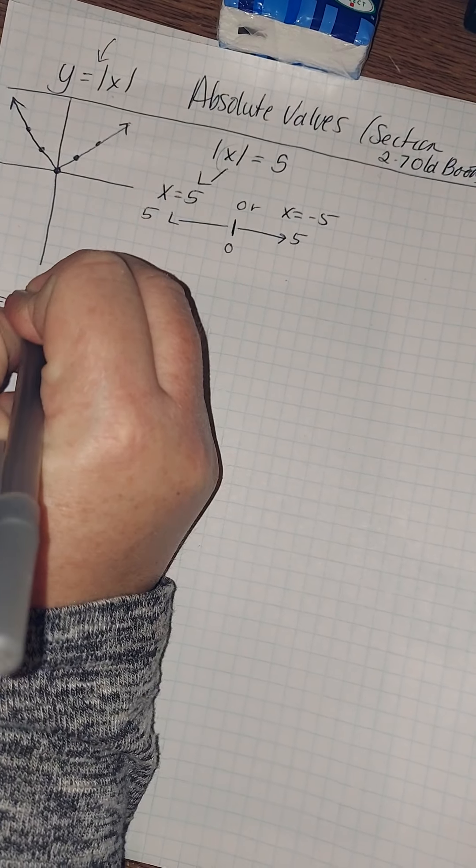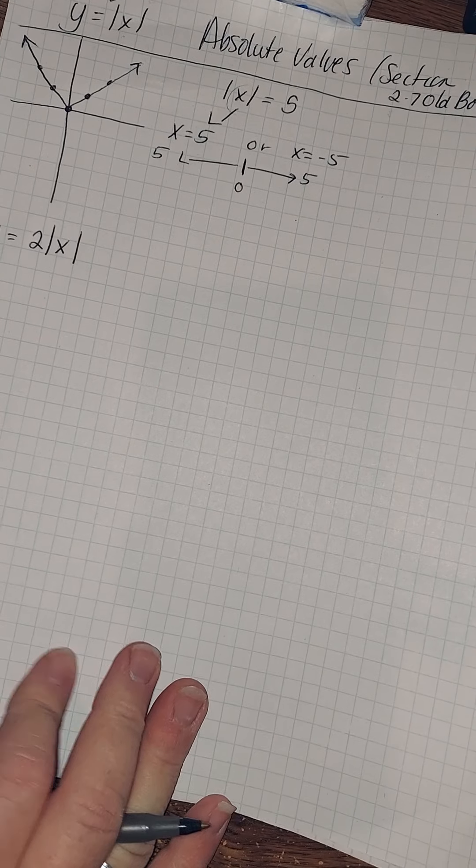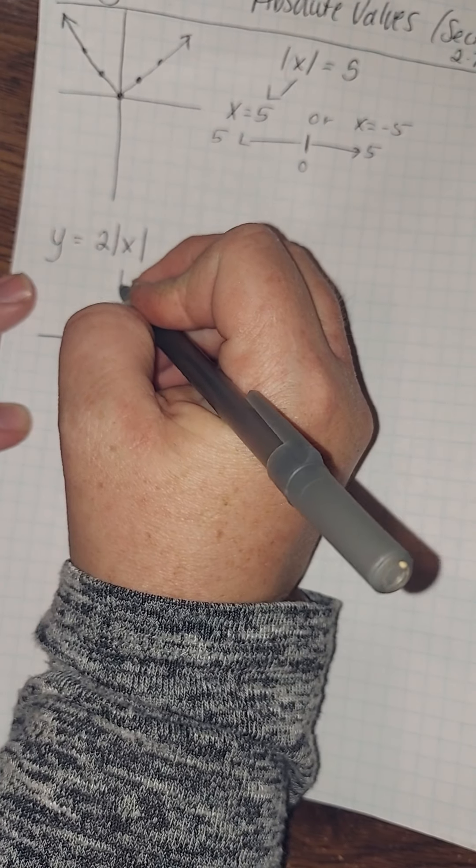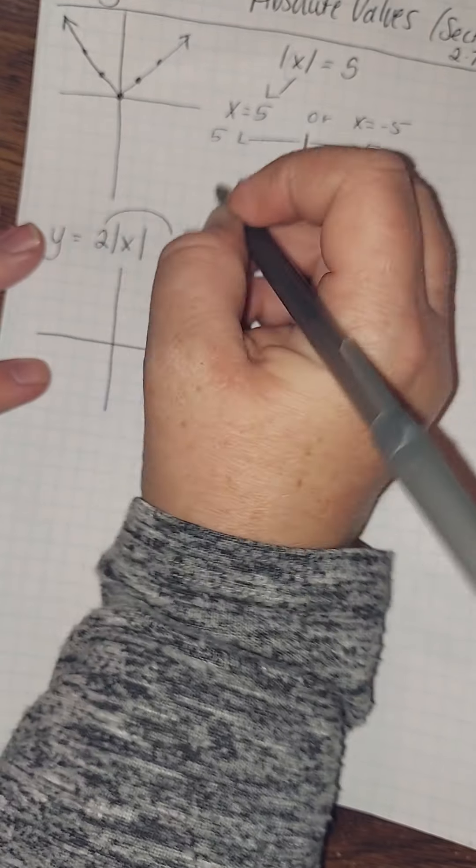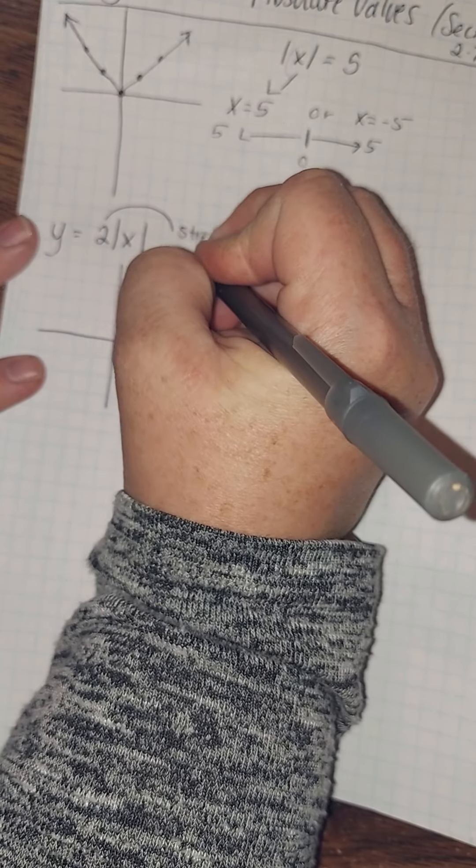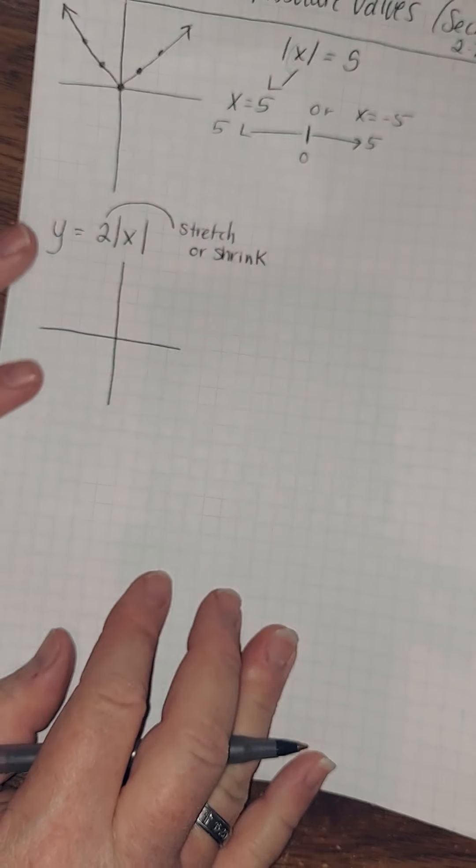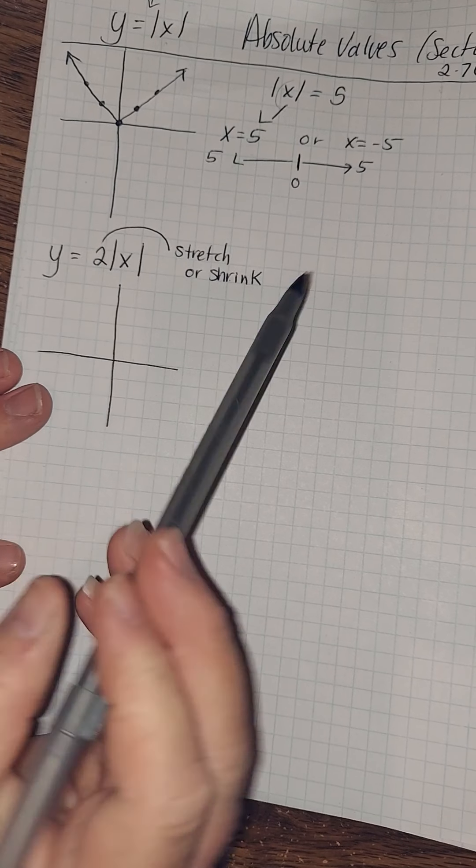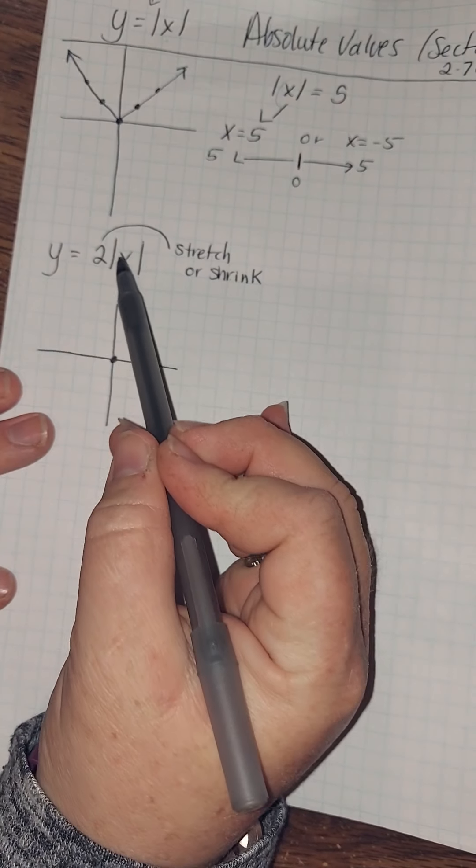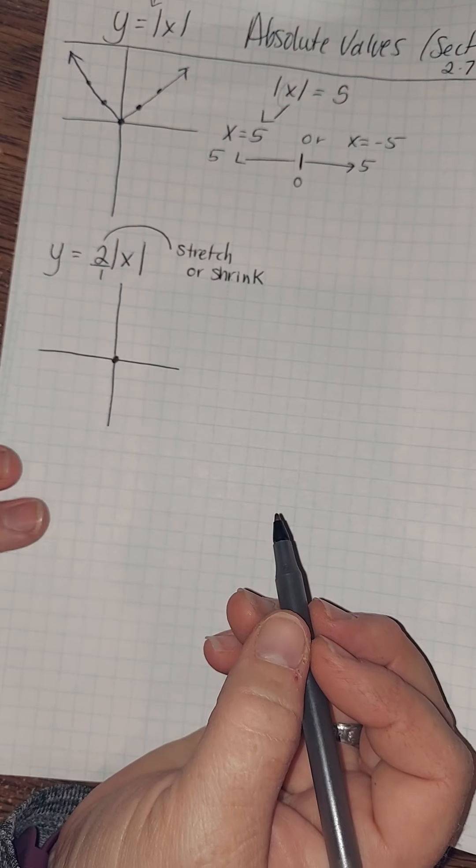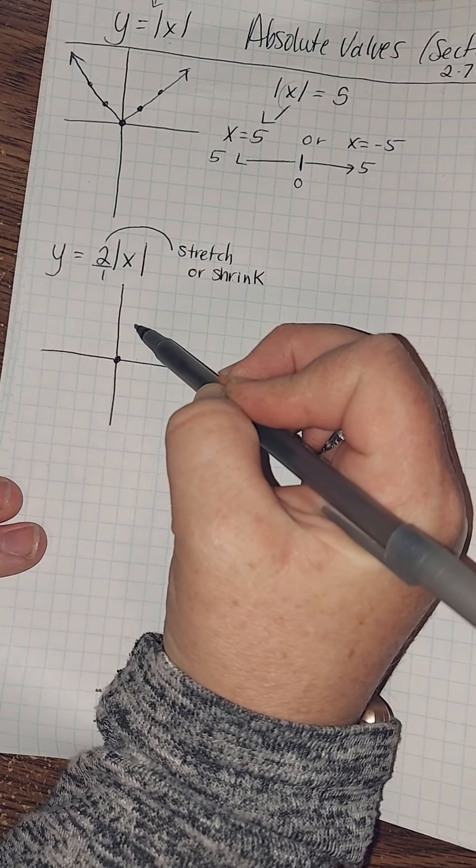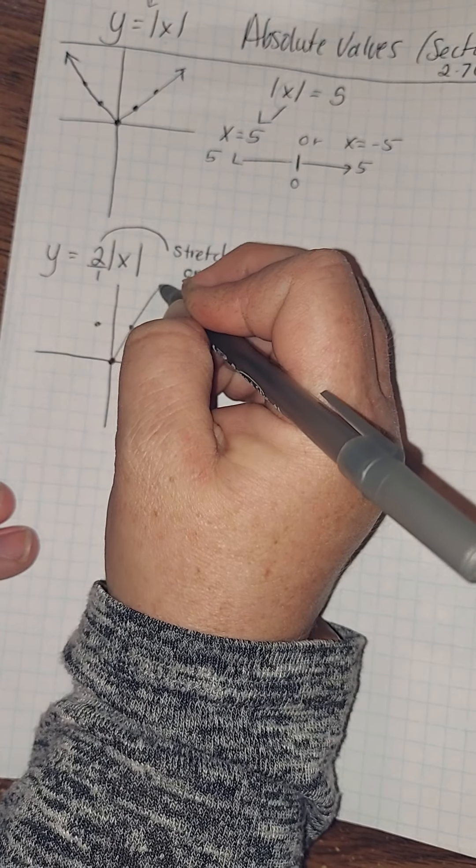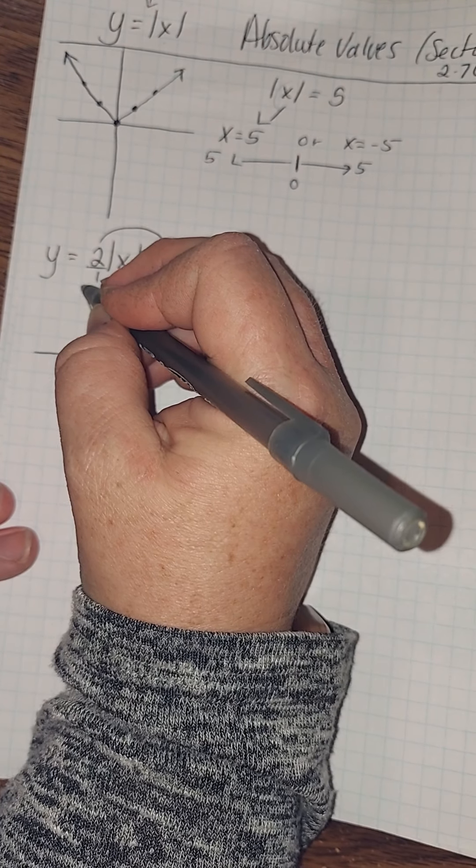So what happens when you do that? Well, if you stop and think about that, a 2 out front, this is going to be a stretch or shrink. Instead of it being a slope of 1, now we're a slope of 2. So I still am starting at 0, 0, except now my slope is 2 over 1. I'm going to go up 2 over 1. And what I do to one side, I do on the other because I am symmetric.